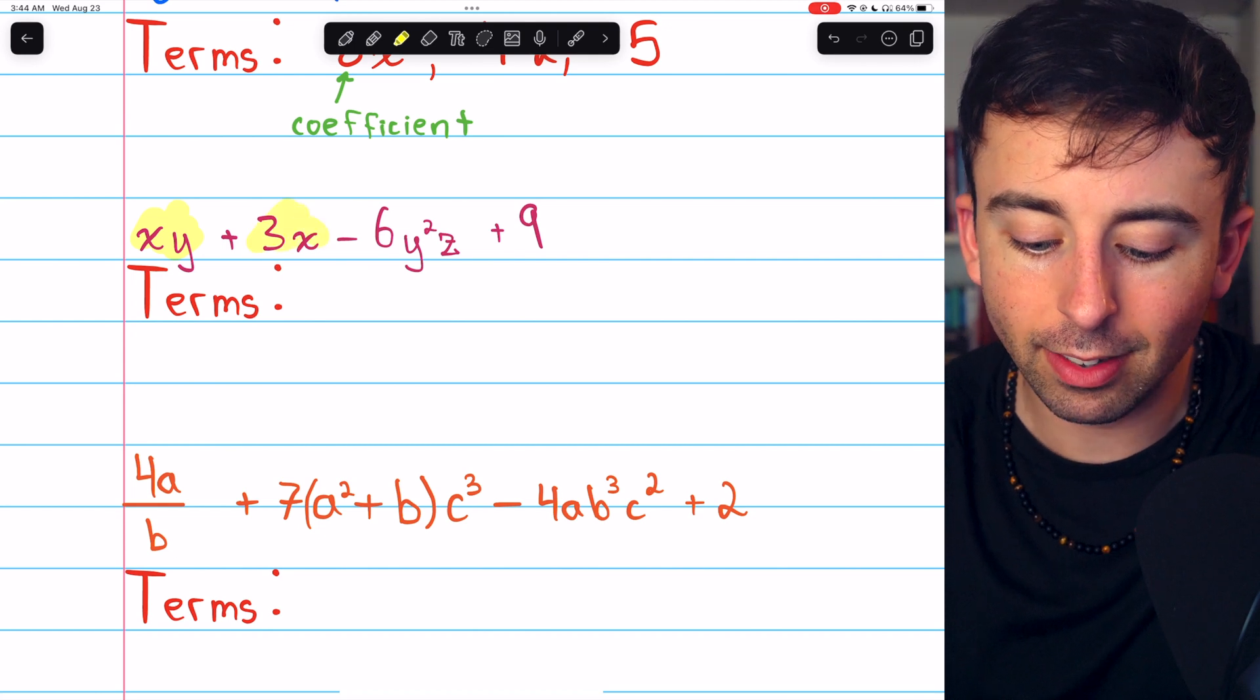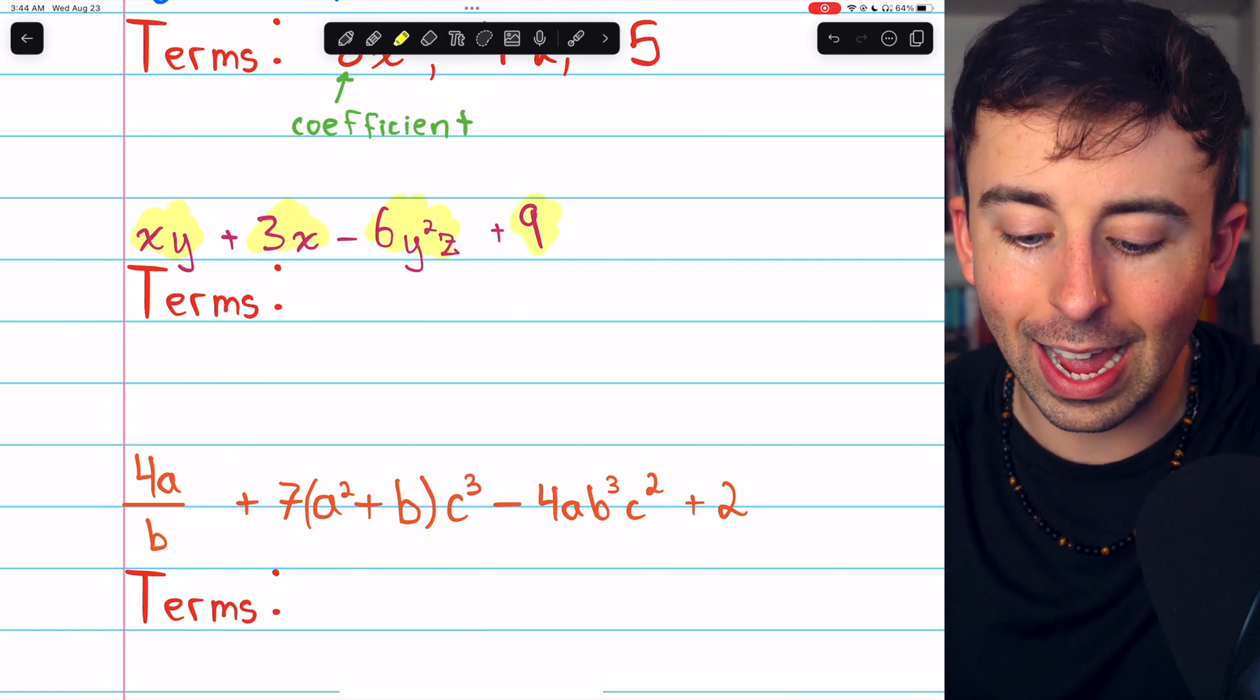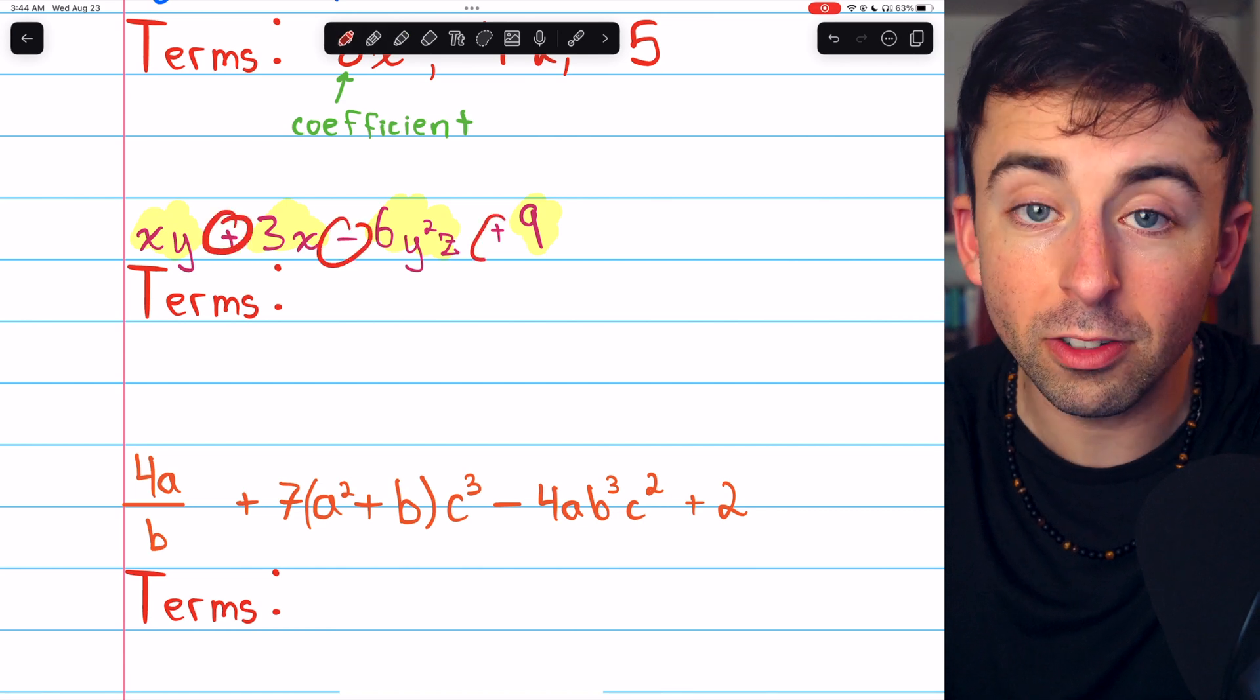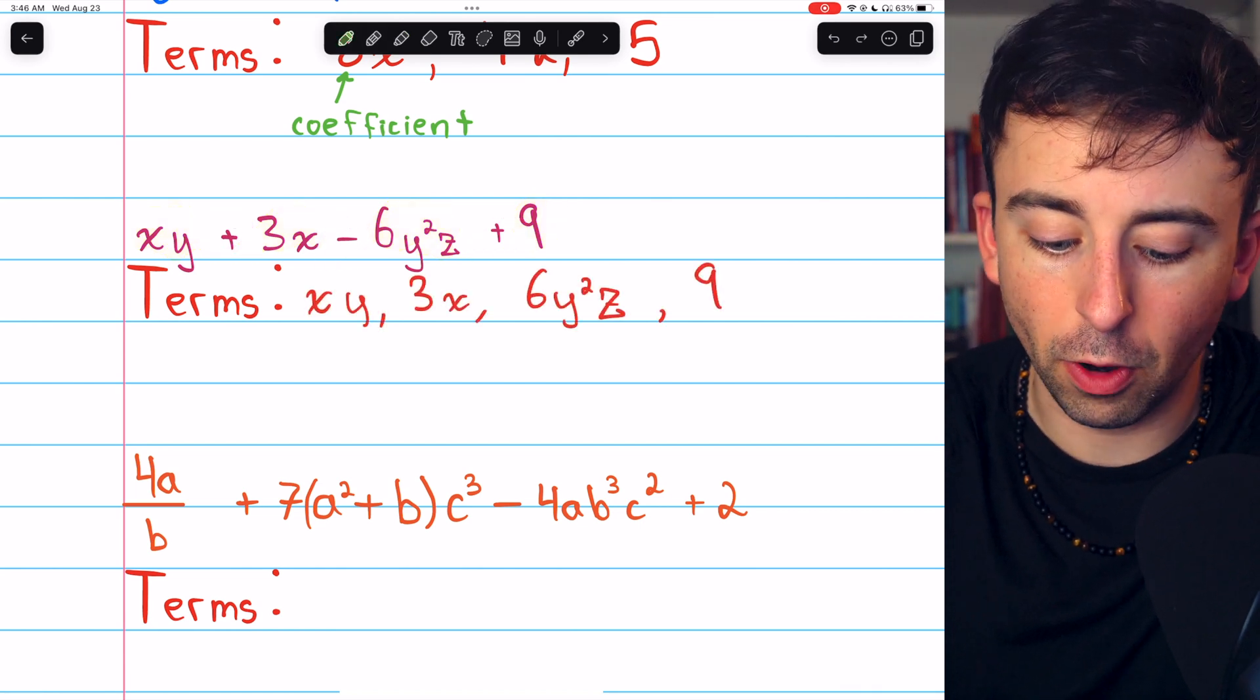xy, 3x, 6y squared z, and 9. Again, those are the things that are being added or subtracted. Let's now identify the factors of these terms.